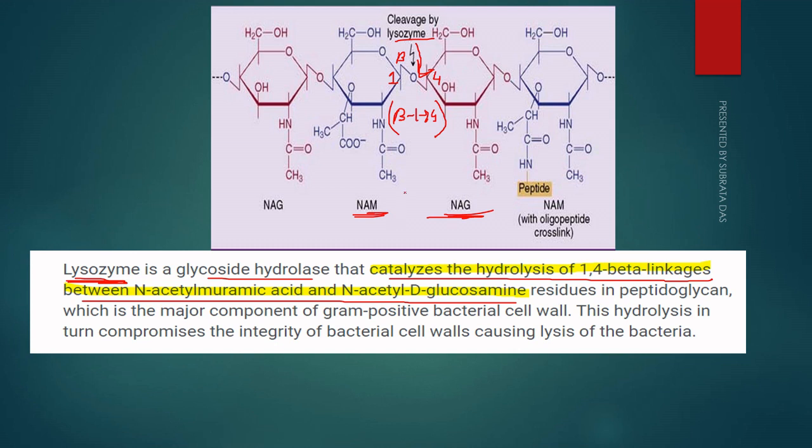Penicillin works when the cell is in the synthesis period, but lysozyme works after the cell wall is synthesized. When the cell wall is synthesized, lysozyme comes and breaks the bond or linkage between the NAG and NAM—that is, breaks the beta 1,4 linkage. In this way, lysozyme works.